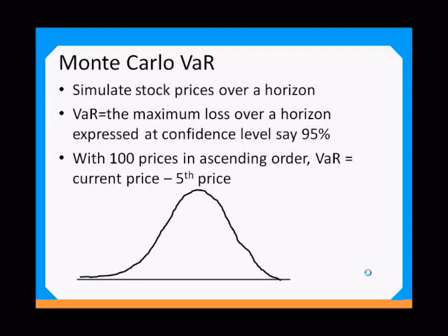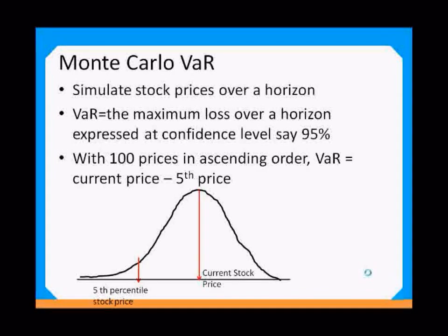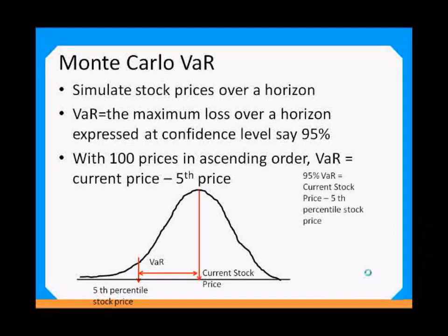So if this were the distribution of stock prices, and if the red line is the current stock price, and this is the fifth percentile stock price, then the difference between them will be the value at risk. To recap: the 95% value at risk is simply the current stock price minus the fifth percentile stock price.